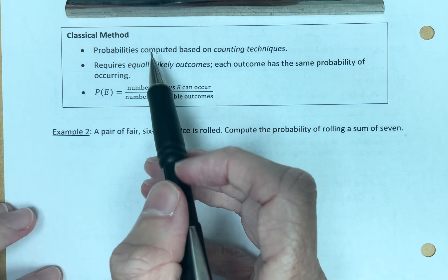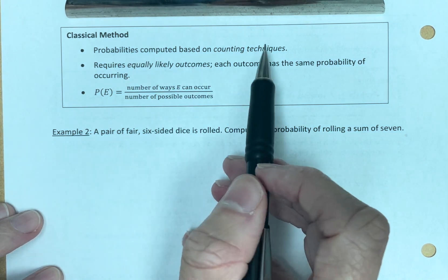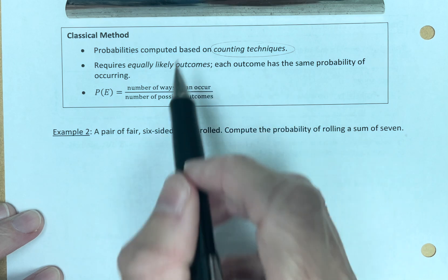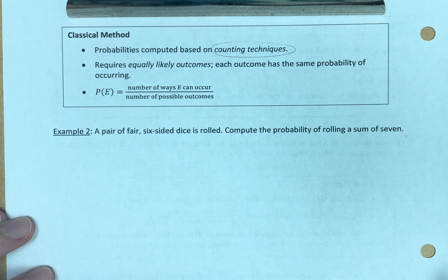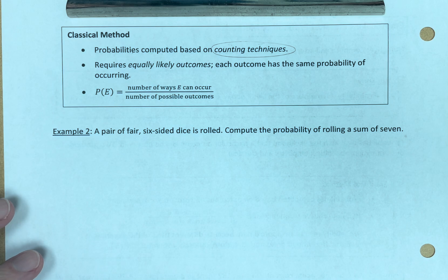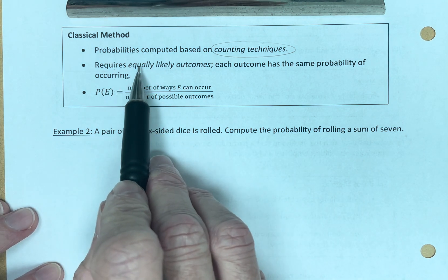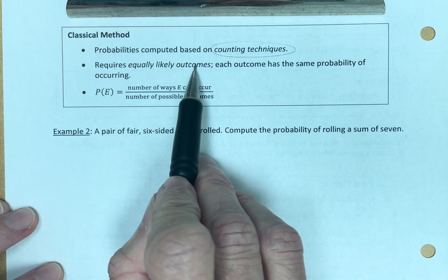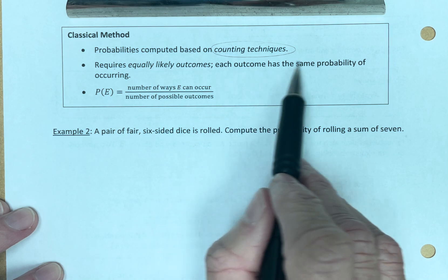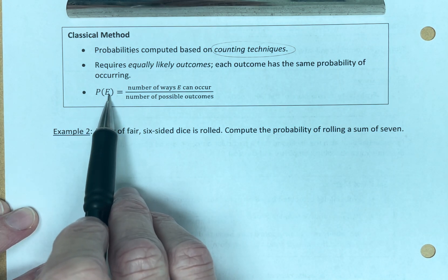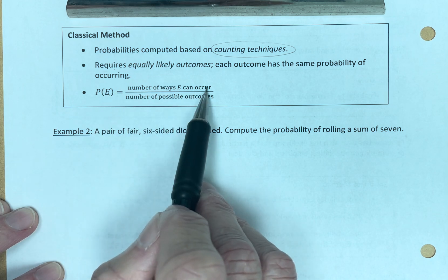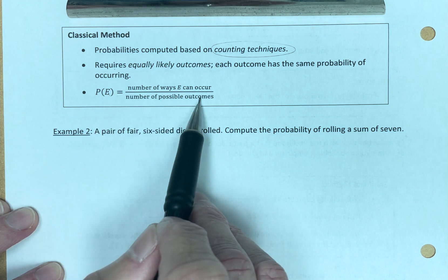The probabilities that are computed based on counting techniques. That's the key piece there. We're not going to look at a particular experiment. We're going to look at the mathematics behind it, more mathy. Requires equally likely outcomes. Each outcome has the same probability of occurring. And in this case, the probability of an event, number of ways E can occur divided by number of possible outcomes.